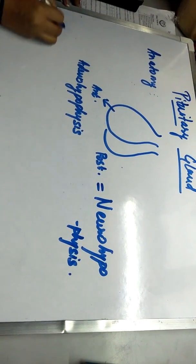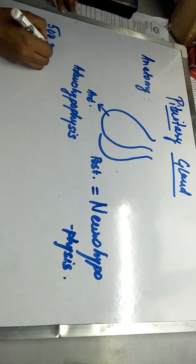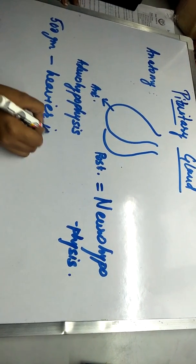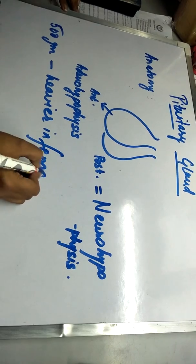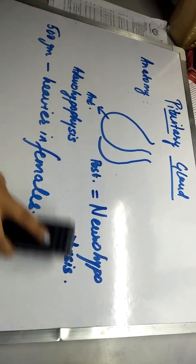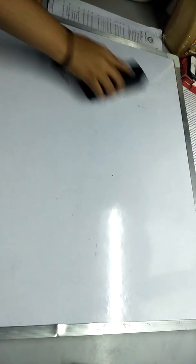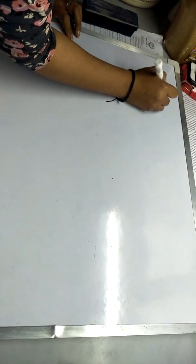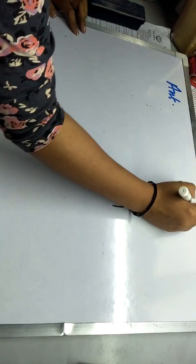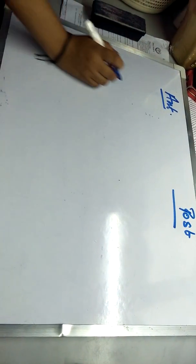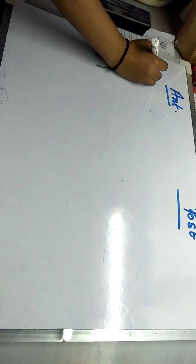The pituitary weighs around 500 milligrams and is slightly heavier in females. Now we should know the basics about both — the anterior pituitary (adenohypophysis) and the posterior pituitary (neurohypophysis).